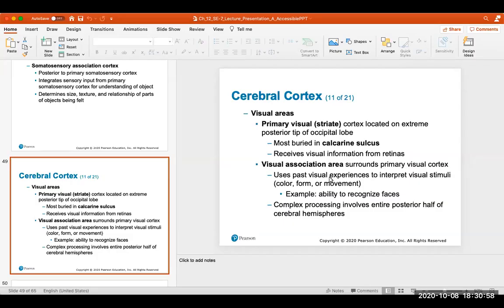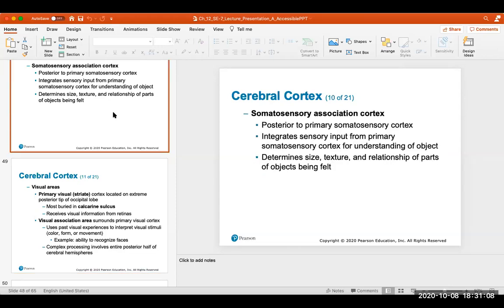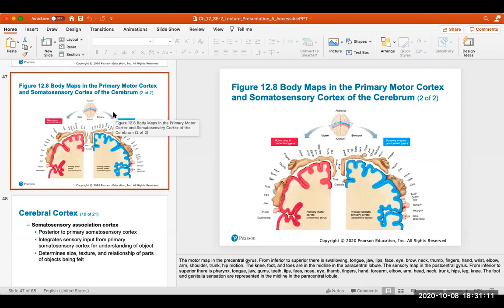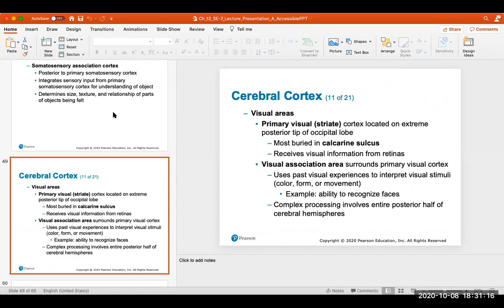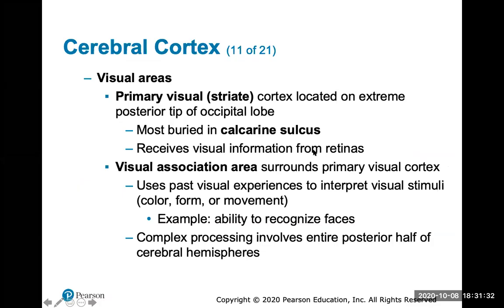We are in chapter 12, which we started on Tuesday, looking at the brain and its function in the nervous system. We talked a little bit about the primary somatosensory cortex and the primary motor cortex found in the pre-central and post-central gyrus. We're now going to move on — we're in part A of this four-part PowerPoint for chapter 12. Pay attention to the lecture and anything I skip over, don't worry about.